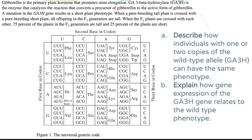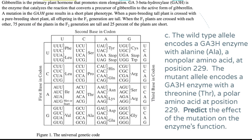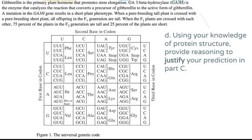Now the actual questions: Part A asks you to describe how individuals with one or two copies of the wild-type allele — the GA3H — can have the same phenotype. Part B asks you to explain how gene expression of the GA3H gene relates to the wild-type phenotype. Part C says: the wild-type allele encodes GA3H with alanine, a non-polar amino acid, at position 229; the mutant allele encodes it with threonine, a polar amino acid, at position 229 — predict the effect of this mutation on enzyme function.